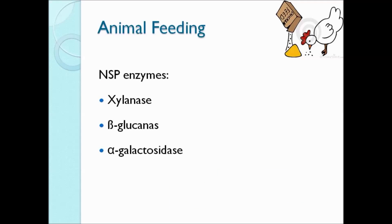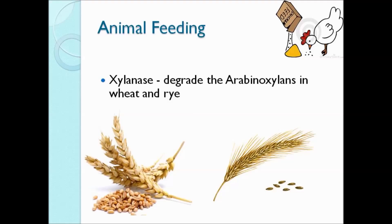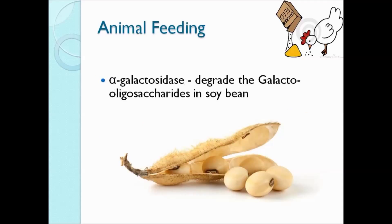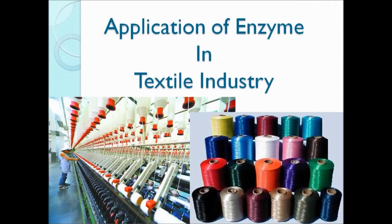Examples of NSP enzymes include: Xylanase, which degrades the arabinoxylans in wheat and rye; beta-glucanase, which degrades beta-glucans in oat and barley; and alpha-galactosidase, which degrades the galacto-oligosaccharides in soybean.